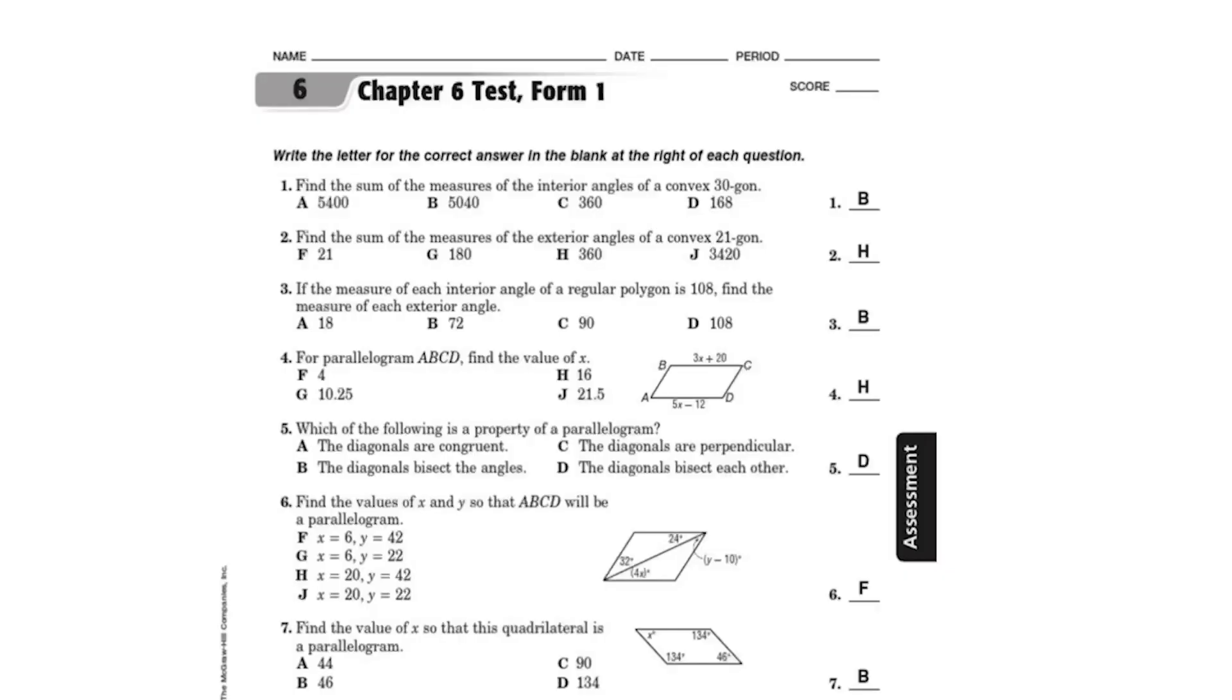Traditionally, spatial thinking has been measured with paper and pencil tasks, much like you took in school. You get a bunch of problems, you solve them, and then they get graded as either correct or incorrect. And instead of history problems or math problems, you get spatial problems, like this one.